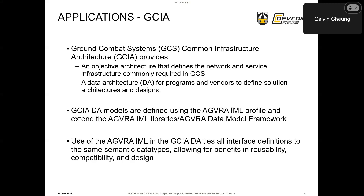First, let's talk about GCIA, or the Ground Combat Systems Common Infrastructure Architecture. GCIA applies an MBSE approach to bridge the gap between existing standards and architectures and acquisition and development processes. It provides an objective architecture for network and infrastructure in a ground combat system, and a data architecture that defines MBSE languages, rules of construction, and reusable model libraries of existing standards and components. The GCIA data architecture models are defined using the AGVRA IML profile and extend the AGVRA IML libraries, including utilization of the DMF and JCDL. This ties all interface definitions to the same semantic data types, promoting reusability, compatibility, and design benefits such as automatic transformation of datasets and a drag-and-drop capability of IML service models into a system architecture model.